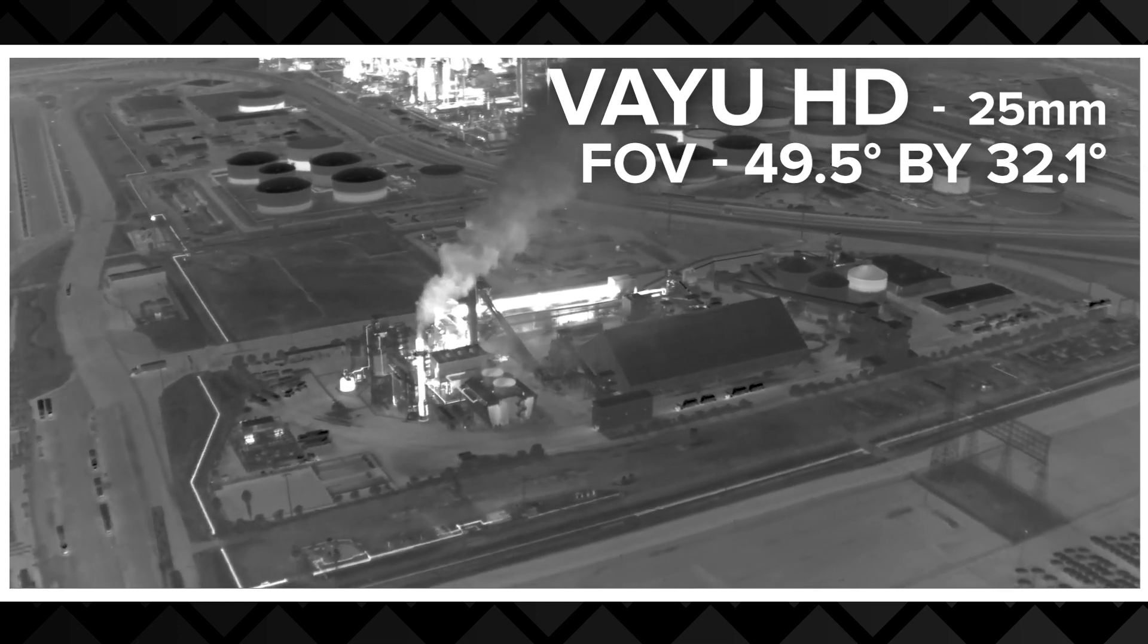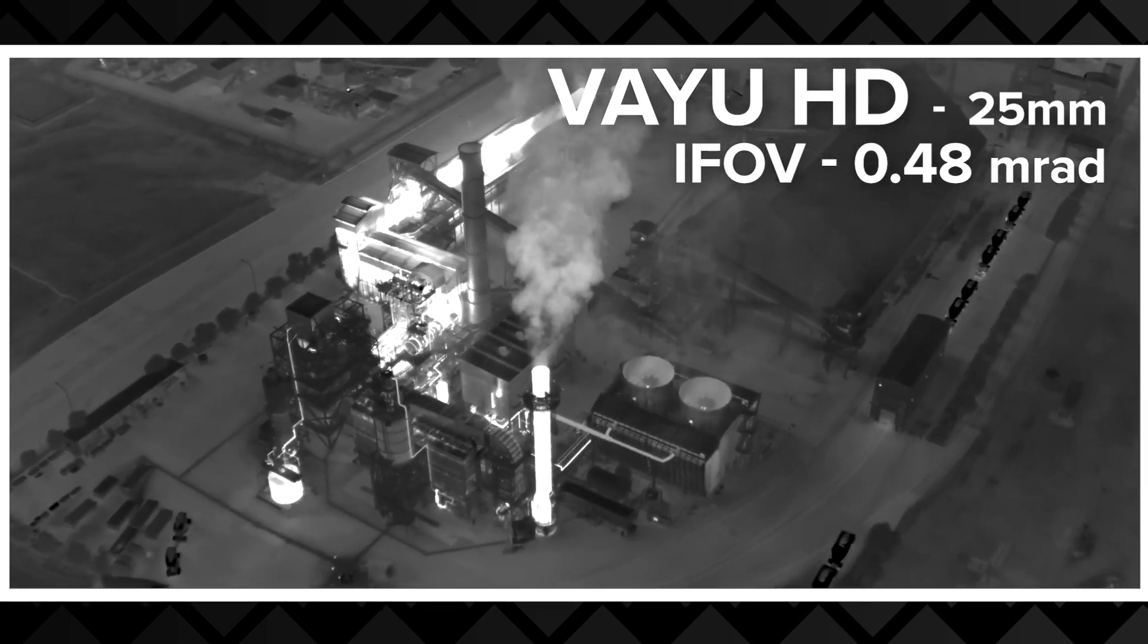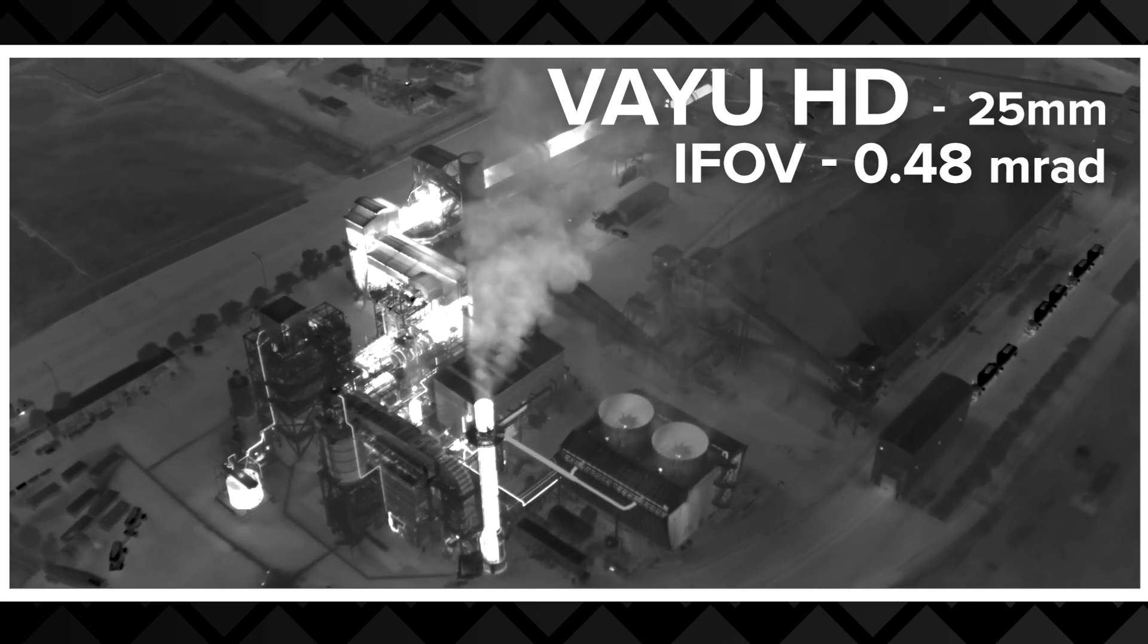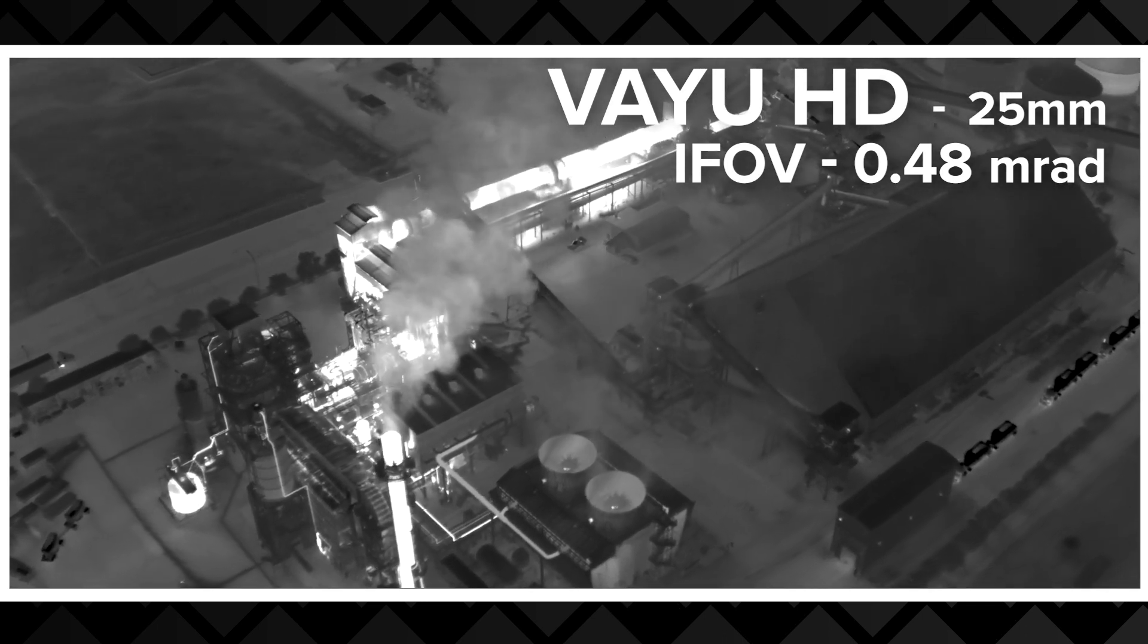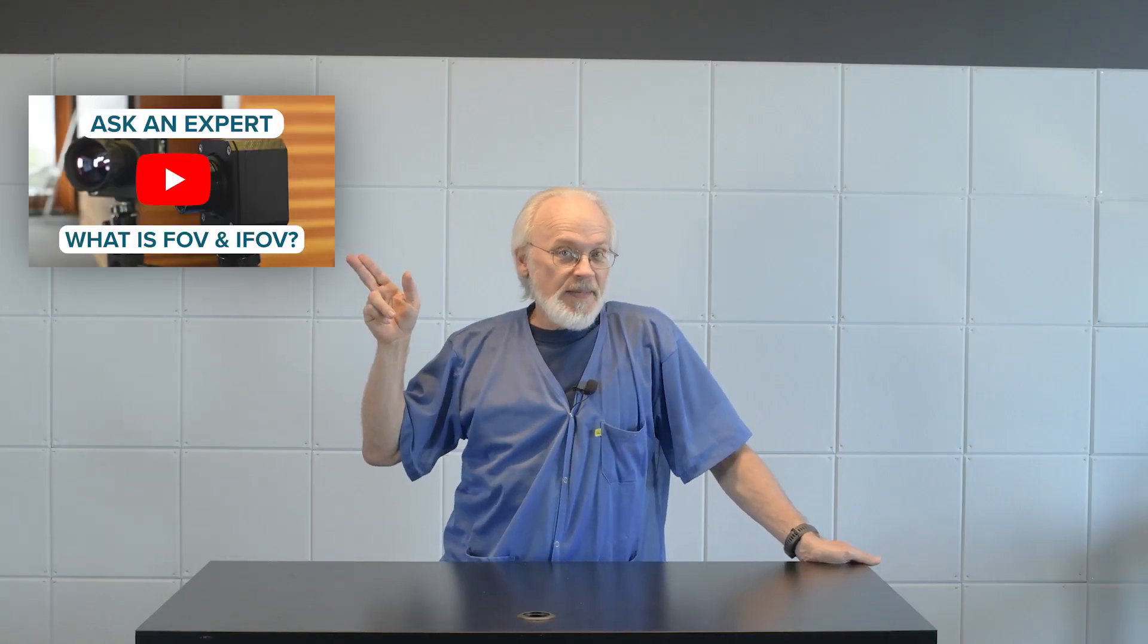Another factor related to that is a thing called instantaneous field of view. That's the field of view of a single pixel. We call it IFOV. And the IFOV at a given distance tells us how many pixels we will get on a certain object at that distance, and that tells us how well we'll be able to resolve that object at that distance. For more information on field of view and IFOV, see our Ask an Expert on the subject.